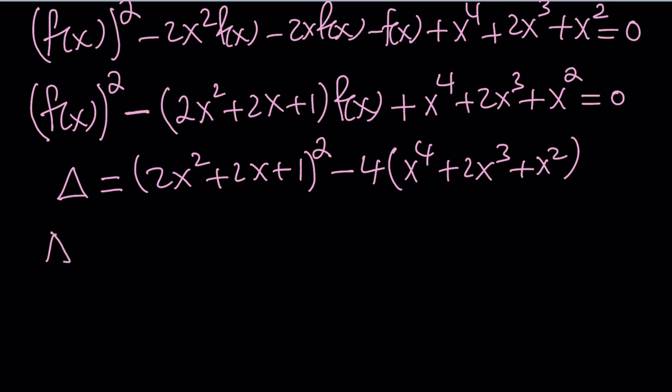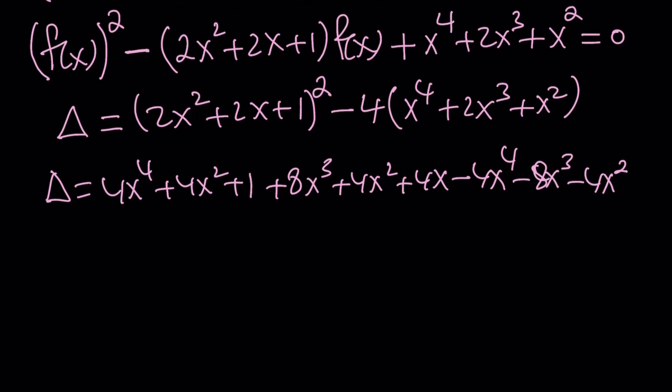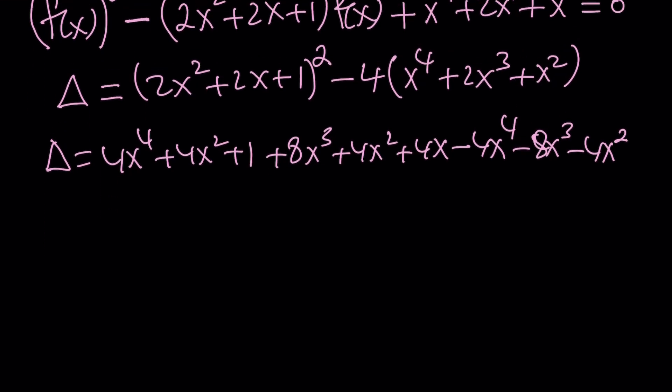Now let's go ahead and simplify this. If you square this, you're going to get 4x to the 4th plus 4x squared plus 1 plus 8x cubed plus 4x squared plus 4x. And then if you expand or distribute the negative, negative 4x to the 4th minus 8x cubed minus 4x squared. That's our discriminant. Again, that looks messy but don't worry, it's going to simplify.